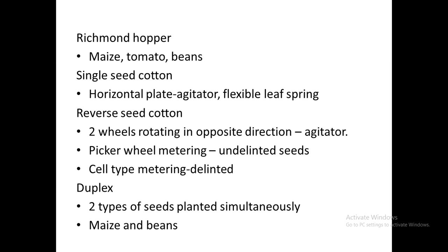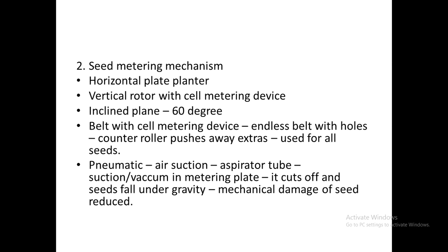The duplex hopper has two compartments, allowing two varieties of seeds or a single variety in both hoppers. Only one hopper can be used at a time. For example, maize and beans can be planted simultaneously in the field using the duplex type of hopper.